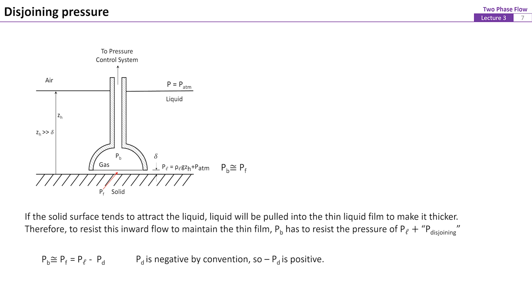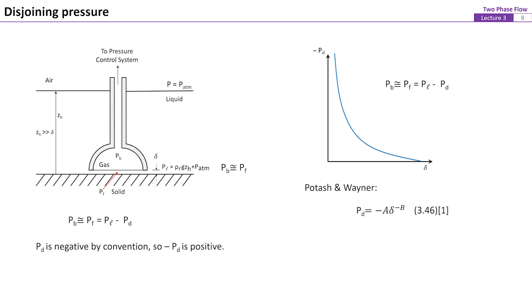By sign convention, if the affinity of the liquid for the solid draws liquid into the film, the disjoining pressure is taken to be negative. Therefore, Pf equals Pb, and Pb equals Pl minus Pd, where Pd is called the disjoining pressure. Noted again that the disjoining pressure, Pd, is defined in the way that for a solid surface to liquid combination that the solid tends to attract the liquid, the value of Pd is negative.